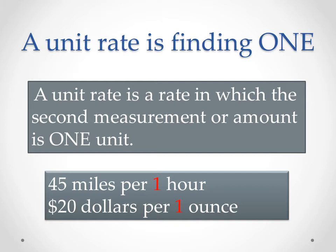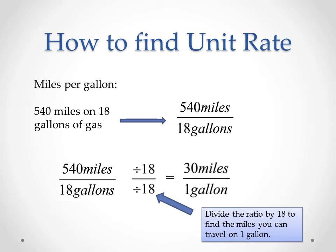A unit rate is finding one of something. A unit rate is a rate in which the second measurement or amount is one unit. From our previous example, we had 90 miles per two hours — if we wanted to find the unit rate, we'd find how far we could go in one hour, which would be 45 miles. We had $60 per three ounces, so for one ounce that would cost $20. In order to find the unit rate, we have to get one of the units to be one.